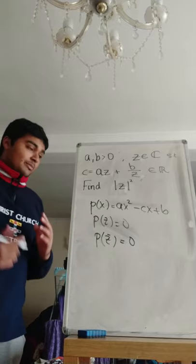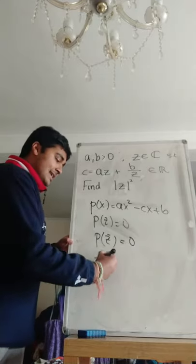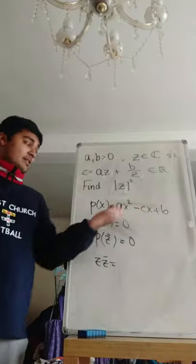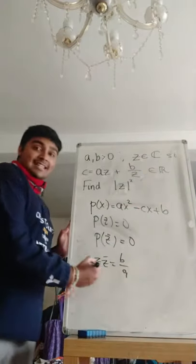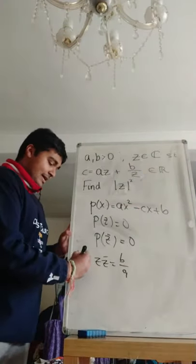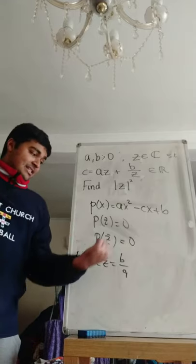But by Vieta's formula, the product of the two roots, namely z times z bar, is simply going to be b over a. But notice that z times z bar is simply the magnitude of z squared. So we get the magnitude of z squared is just b over a.